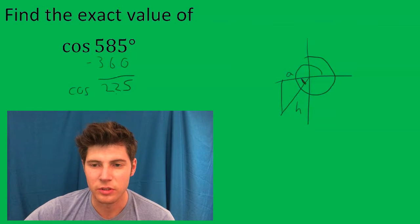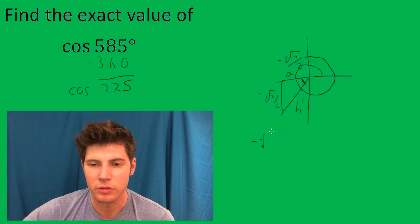So in the unit circle, this is negative root 2 over 2. And this is root 2 over 2. And this is 1. So the answer to this problem is going to be negative root 2 over 2.